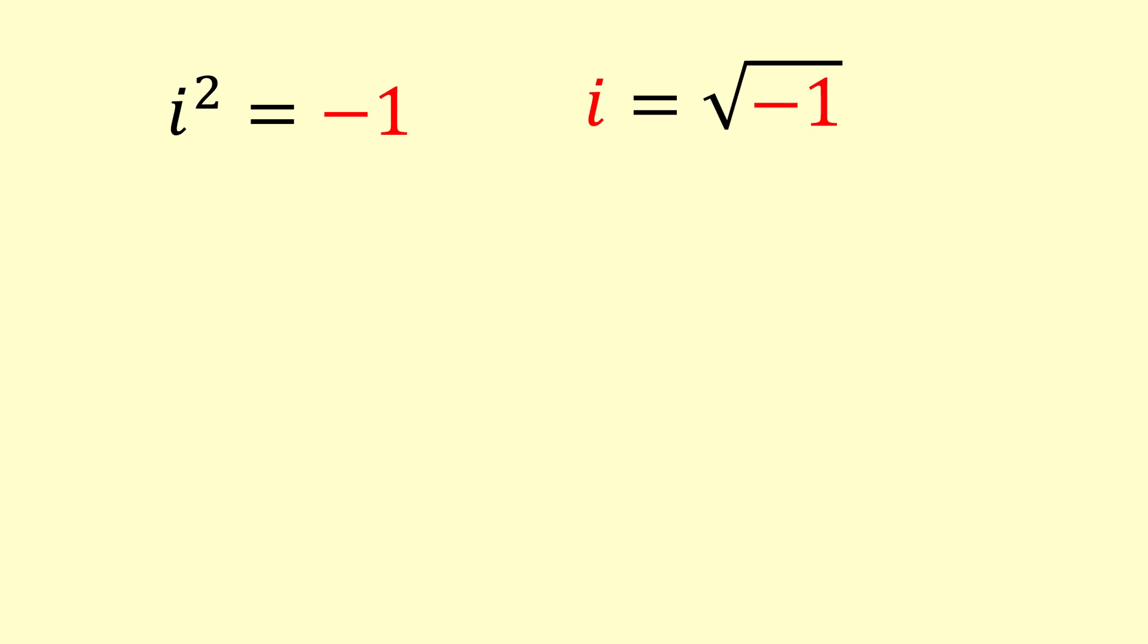Now, we want to calculate square root of negative 4. We can write it as square root of the quantity 4 times negative 1. Further, by using properties of radicals, we can write it as square root of 4 times square root of negative 1.